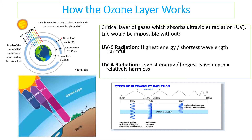There are different types of ultraviolet radiation. Ultraviolet C has the highest energy and shortest wavelength and is very harmful. Ultraviolet B is in the middle, and ultraviolet A has the lowest energy with the longest wavelength and is relatively harmless. What the ozone does is block out ultraviolet C, which is the most dangerous and harmful one that we need protection from.